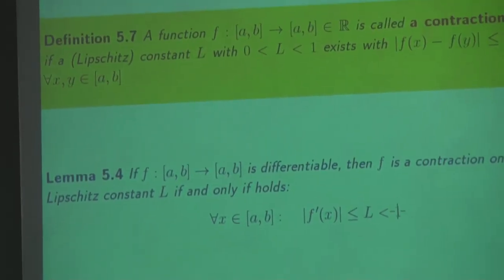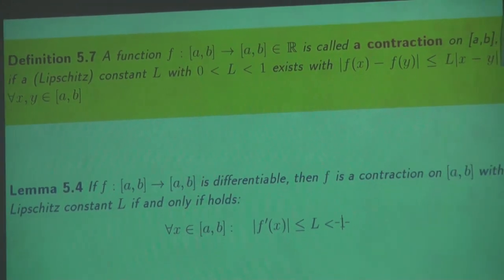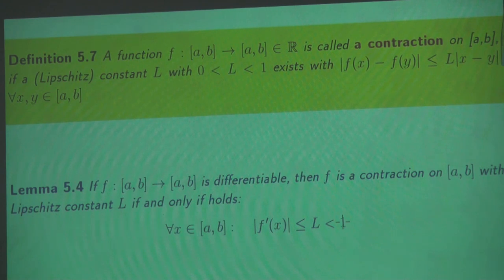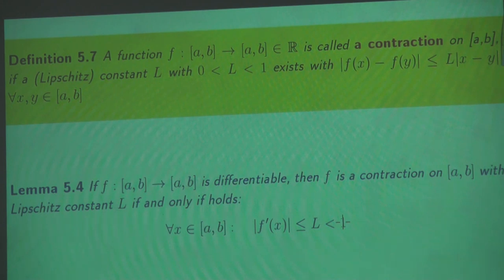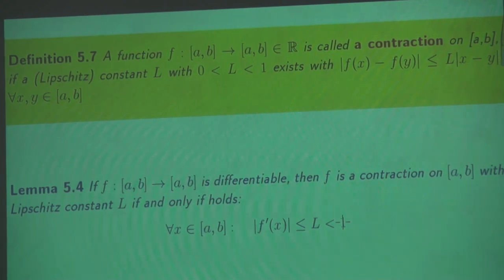This fixed point iteration is quite a nice method because it even works if the function is not differentiable. We can only talk about the slope of a function if the function is differentiable. But if the function is not differentiable, there is a generalization of the slope — and that leads us to the definition of contracting functions.